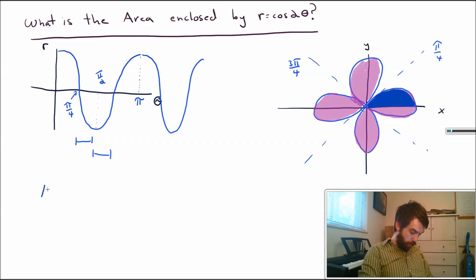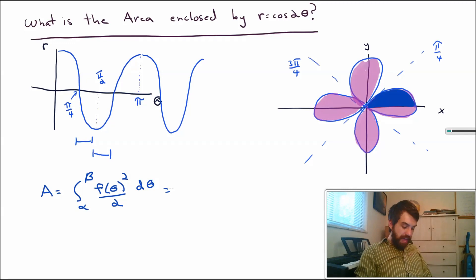We know a formula for the area. We know that the area is given by the integral between alpha and beta, so two different theta values, of the function of theta squared divided by 2 d theta. The f of theta part, that seems quite reasonable, it was given to us. This is just going to be cosine squared of 2 theta all divided by 2 d theta. But the hard part is figuring out what the limits are, figuring out what the theta values are.